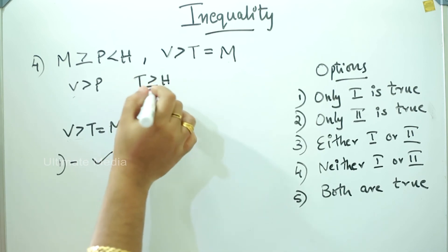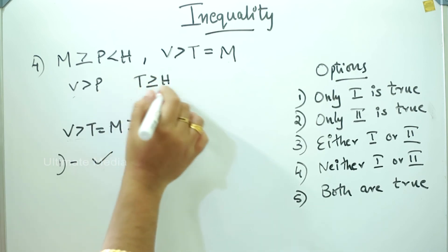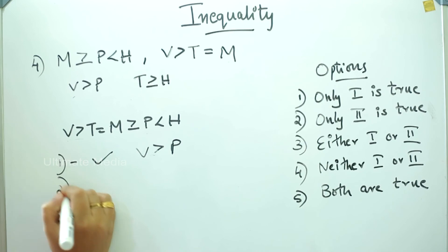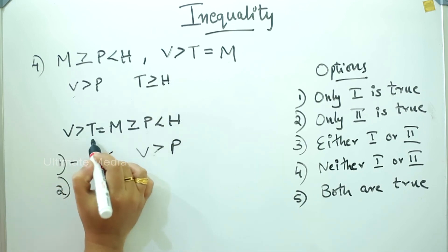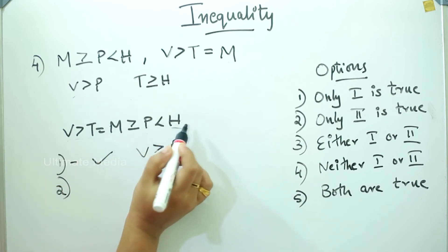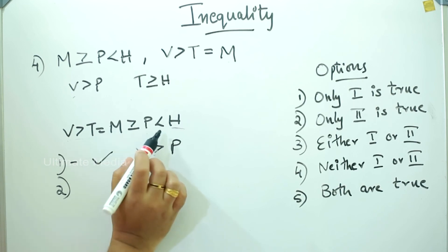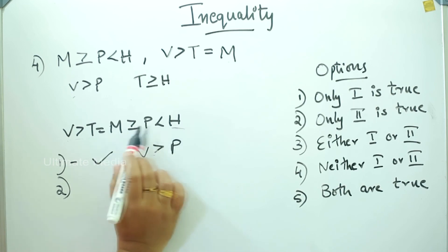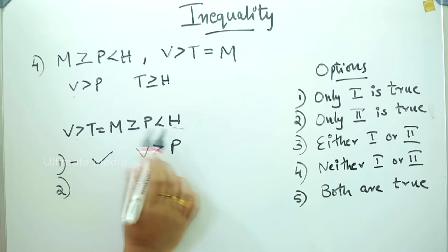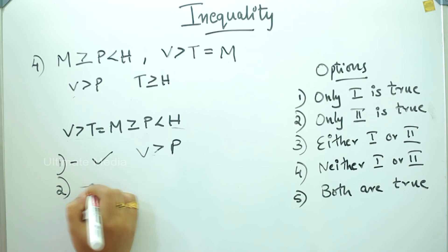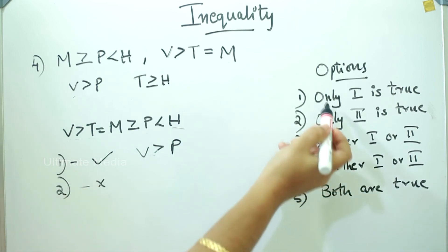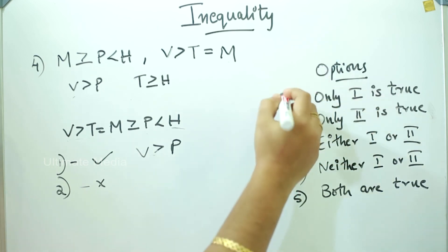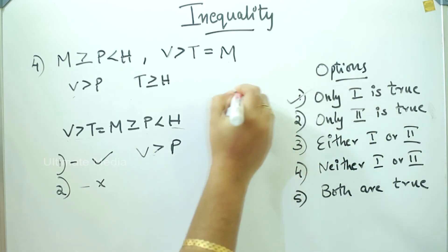Second conclusion: T is greater than or equal to H. T is equal to H; H is greater than H. It is not the same — it is the opposite direction. It is the sign. First one is the answer. You can see the options: only one is true. One is the option — one is the same.